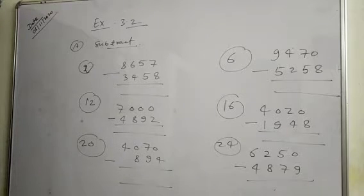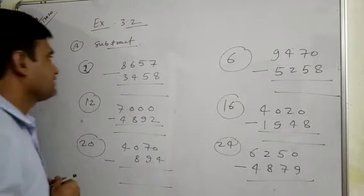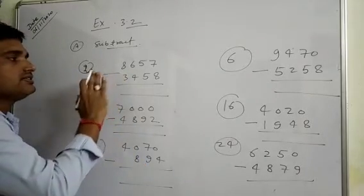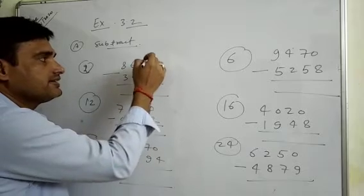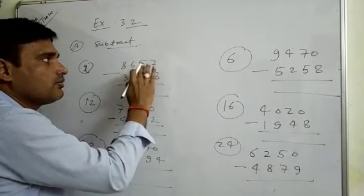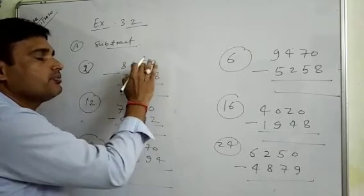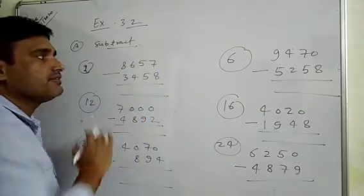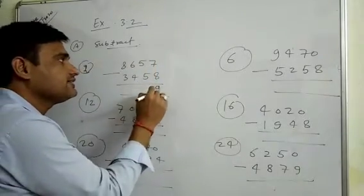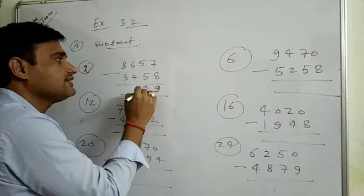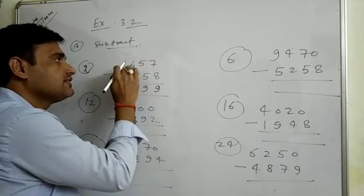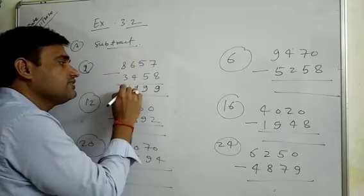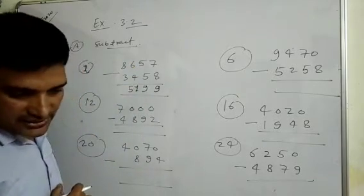Exercise 3.2, part A: subtract 8657 minus 3458. 7 is less than 8, so we take 1 carry from 5, making it 17. 17 minus 8 is 9. Now 4 minus 4 is 0, wait, we borrowed 1, so 5 minus 1 is 4, then 4 minus 4 is 0. 5 minus 1 is 4. And 8 minus 3 is 5. The answer is 5199.